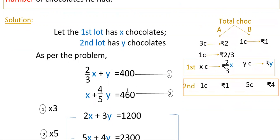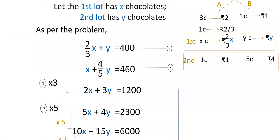Since the equations are in fraction form, we multiply to clear the fractions. Multiplying the first equation by 3 gives: 2x + 3y = 1200. Multiplying the second equation by 5 gives: 5x + 4y = 2300.